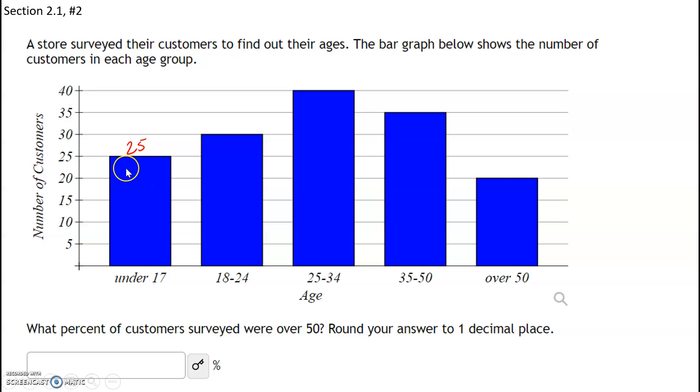How many people are under 17? 25. How many are between 18 and 24? That's 30 people. How many are between 25 and 34? That's 40 people. So these are frequencies, that's the number of people.